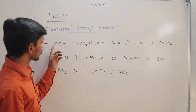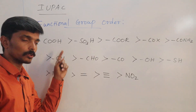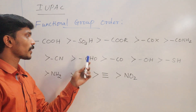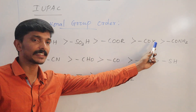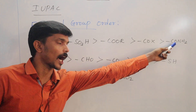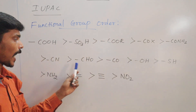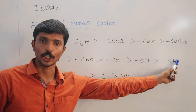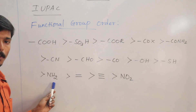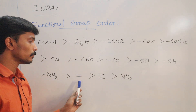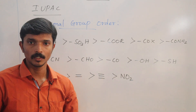Who has first preference? Carboxylic acids, then Sulphonic acid, Ester, Acid Halides, Amides, Nitrile, Aldehyde, Ketone, Alcohol, Thiol, Amines, Double bond, Triple bond, and NO2.